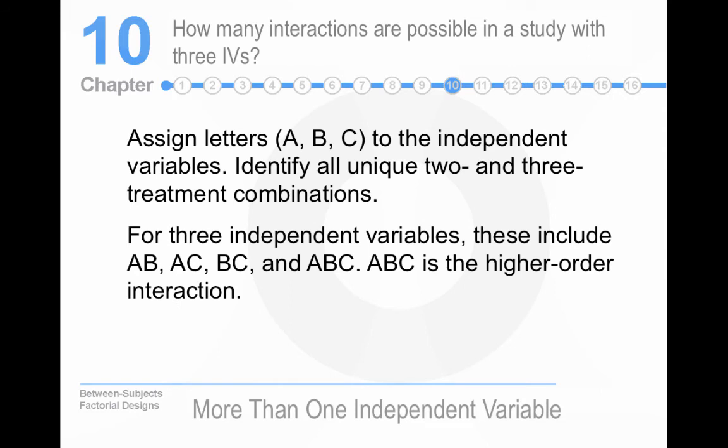So how many interactions are possible in a study with three independent variables? Well, let's stick with our two by three by three, and what we can do is we can label each of these a, b, and c. And so the gender of the newscasters would be, we could label as a, the age of the newscasters we could label as b, and the type of news we could label as c. And so when we're looking at two-way interactions, we're looking at permutations, not combinations.